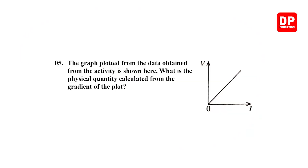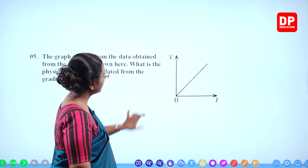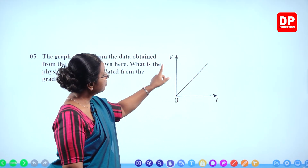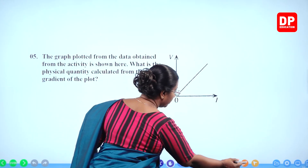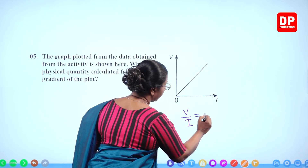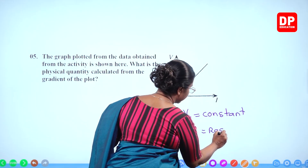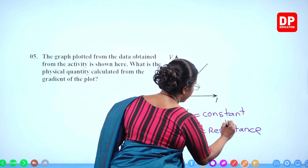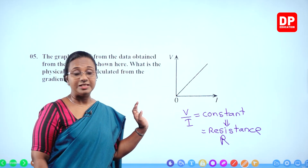Fifth part: the graph plotted from the data is shown — potential difference on the Y-axis and current on the X-axis. What is the physical quantity calculated from the gradient of the plot? The gradient M = (Y2 − Y1)/(X2 − X1), which gives the difference in potential difference divided by the difference in current — that is, potential difference divided by current, which equals resistance.